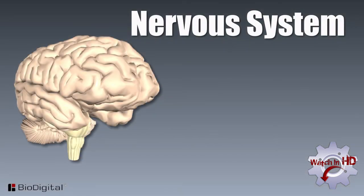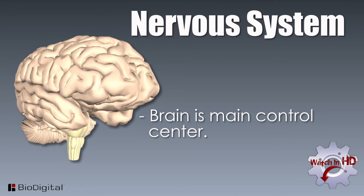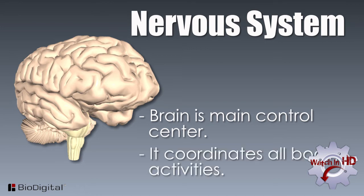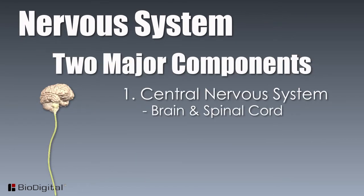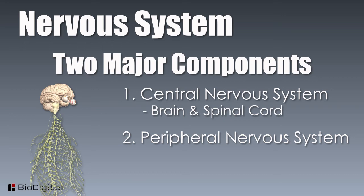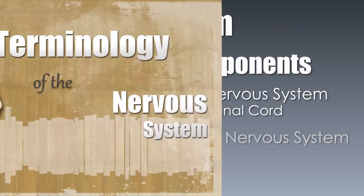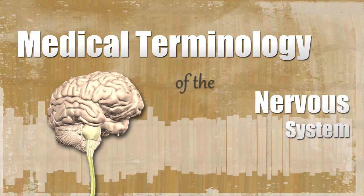The nervous system, with the brain as its main control center, coordinates all bodily activities. There are two major components to this system: one, the central nervous system, which is the brain and spinal cord; and two, the peripheral nervous system. In this video, we'll take a look at some of the medical terminology associated with the nervous system.